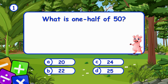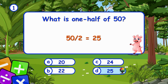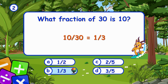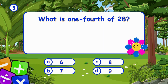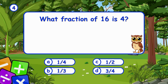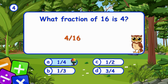What is one half of 50? It's D, 25. One half of 50 is 25. What fraction of 30 is 10? It's B, one third. 10 out of 30 is one third. What is one fourth of 28? It's B, 7. One fourth of 28 is 7. What fraction of 16 is 4? It's A, one quarter. 4 over 16 equals one quarter.